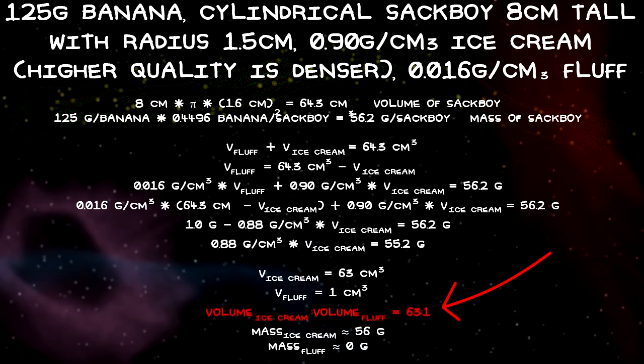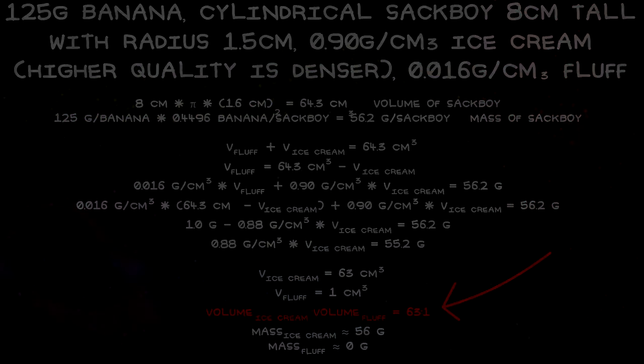As you can see, we have an ice cream to fluff ratio of 63 to 1 by volume. By mass, he's almost literally entirely ice cream. So let it be known that Sackboy is in fact stuffed with very little fluff and almost entirely expensive, high quality ice cream — unless his fluff is just a lot denser than most kinds. It's probably not very soft in any case.